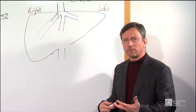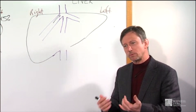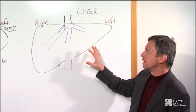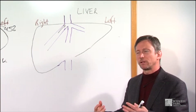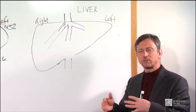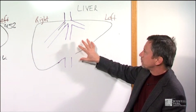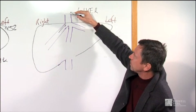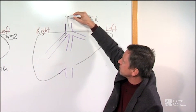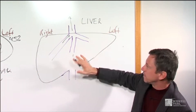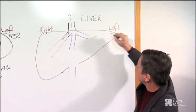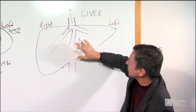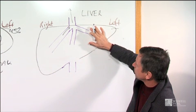The choice of liver therapy — surgical resection or ablation — depends on the size and number of tumors and where the tumors are relative to the blood vessels inside the liver. As blood leaves the liver, it goes back to the heart through the inferior vena cava. The liver is divided into a right lobe and a left lobe. There is the right hepatic vein that drains the whole right side of the liver, a middle hepatic vein, and then the left hepatic vein.